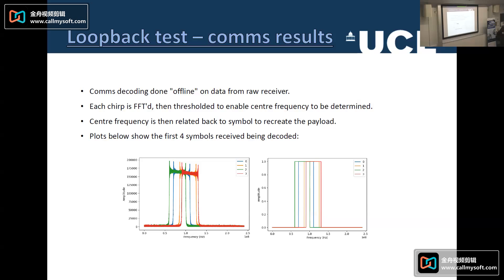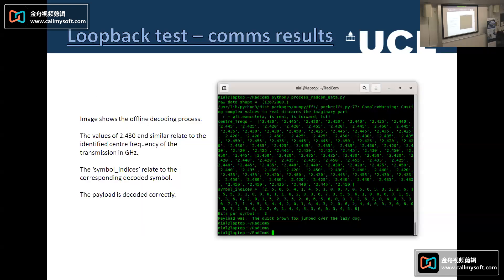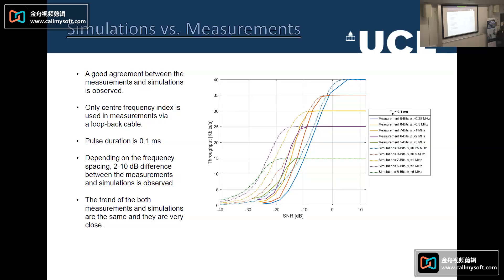The comms payload used the sentence the quick brown fox jumps over the lazy dog, which was 360 bits of data, therefore 120 waveforms were transmitted to communicate that. Here you can see our loopback from a radar perspective is not that exciting, it's just a consistent range return of that length, but there is some fluctuations because it has this comms modulation of central frequency and bandwidth applied. The comms decoding offline on the data from this raw received mode, each chirp was FFT'd, thresholded, and then the central frequency to be determined. The center frequencies then were related back to the symbol. Our system isn't very flat in frequency, we have some roll-off there. Good agreement between the measurements and the simulations were observed in general.